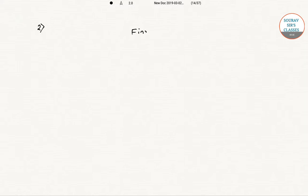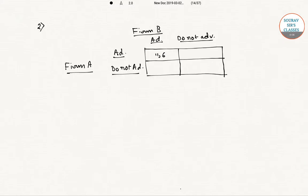There is Firm B and Firm A. Firm A has two strategies: either they can advertise or they don't advertise. In this game theory model, the payoffs for advertisement are given as 11, 6 and for don't advertise as 16, 0. Firm A's two strategies are advertise and do not advertise, with payoffs given as 7, 9 and 20, 2. So the full payoff matrix is: 11, 6 | 16, 0 | 7, 9 | 20, 2.